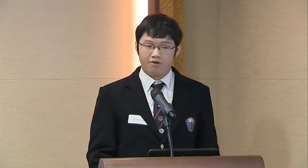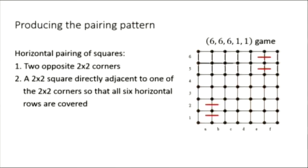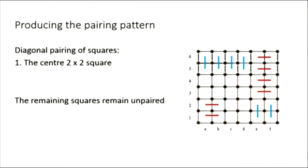And here's the pairing pattern for k equals 5. In fact, for larger values of k, we have an algorithm to generate the pairing patterns. Here are the horizontal pairing lines, the vertical ones, and then the diagonal ones. Similar pairing patterns can be used for larger values of k.